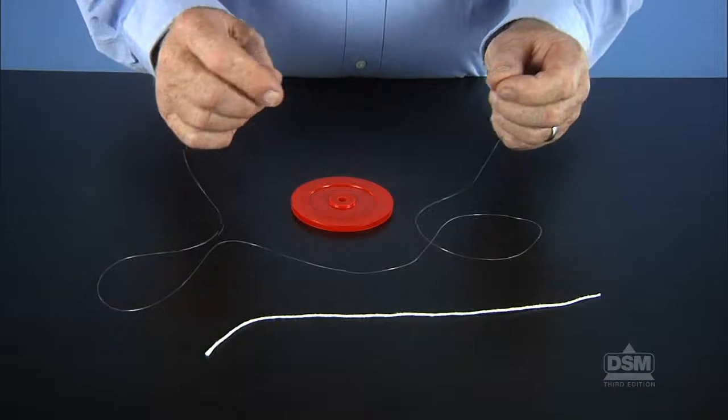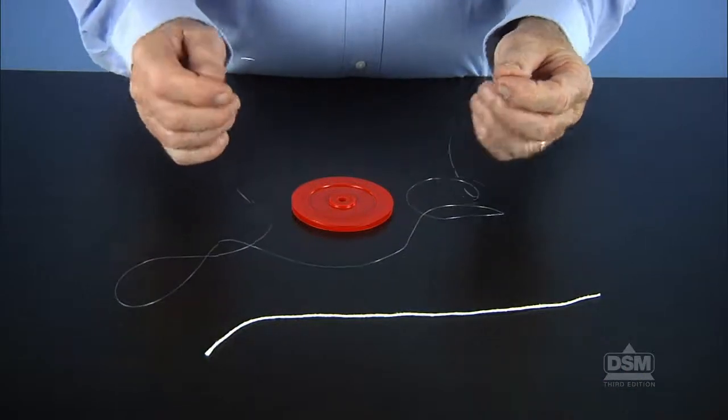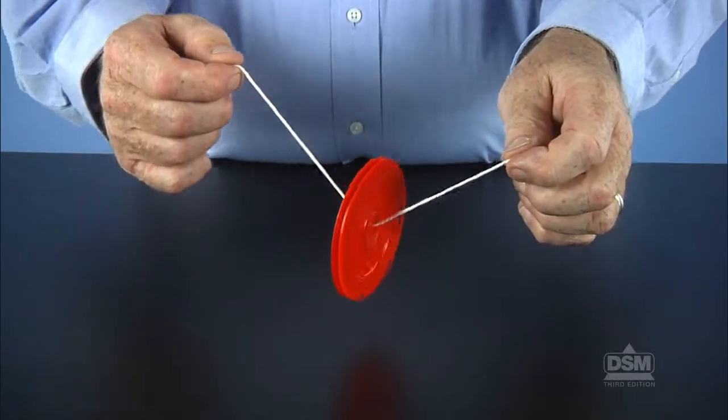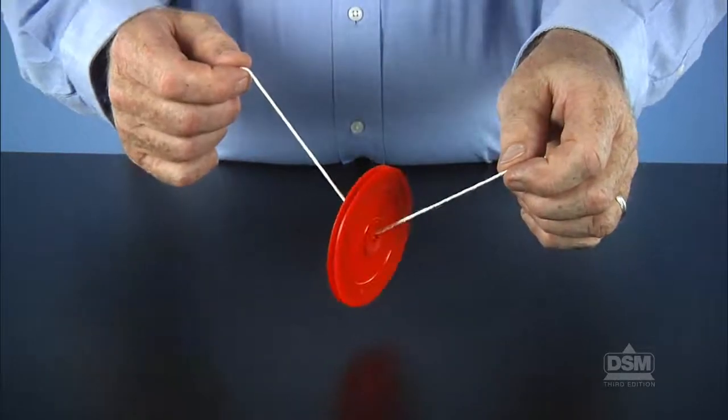Next, distribute a pulley, a 30-centimeter piece of string, and a 1.5-meter piece of fishing line to each team. Have one team member insert the 30-centimeter piece of string through the center of the pulley and hold the pulley above the desktop by the ends of the string.